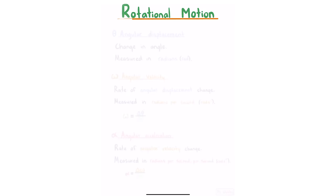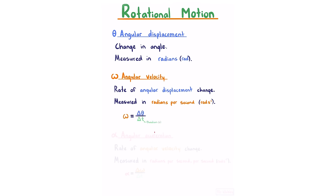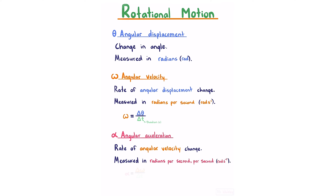Rotational motion. Angular displacement θ is the change in angle, measured in radians. Angular velocity ω is the rate of angular displacement change, measured in radians per second: ω equals θ divided by duration. Angular acceleration α is the rate of angular velocity change, measured in radians per second per second: α equals change in angular velocity divided by duration.